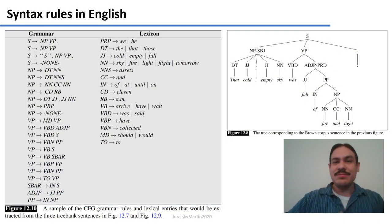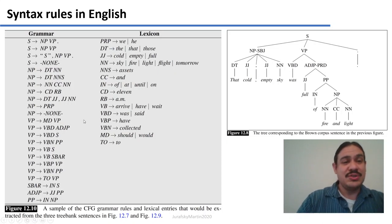So here we have an example of a CFG grammar in English, where we have rules like a sentence is a noun phrase and a verb phrase. And then a noun phrase is a determiner and a noun. For example, using these rules, which have non-terminals and terminals like we, he, the, that, we can parse sentences like that cold empty sky was full of fire and light.